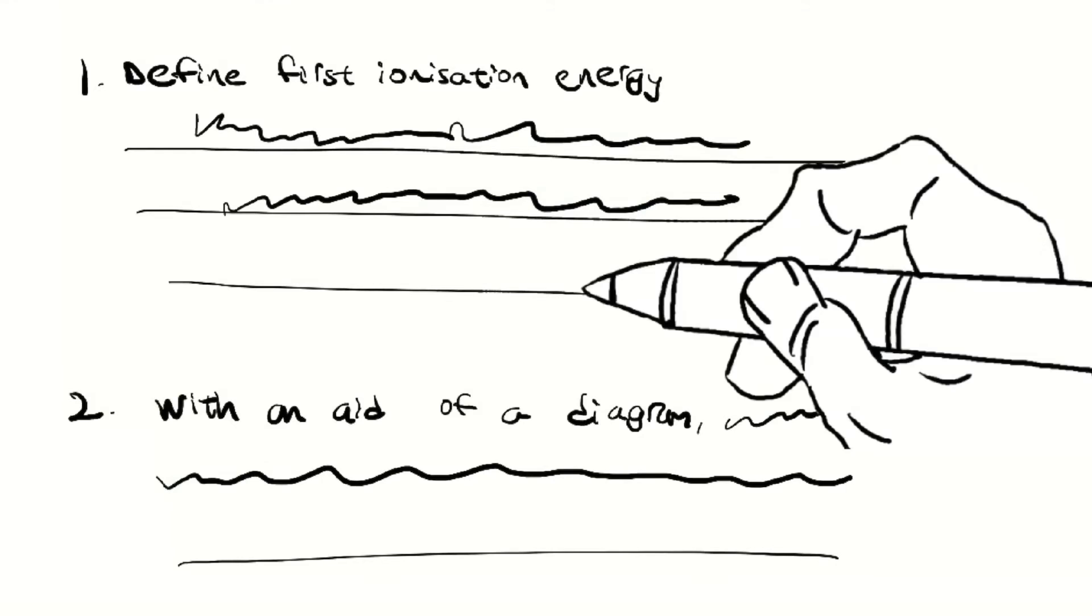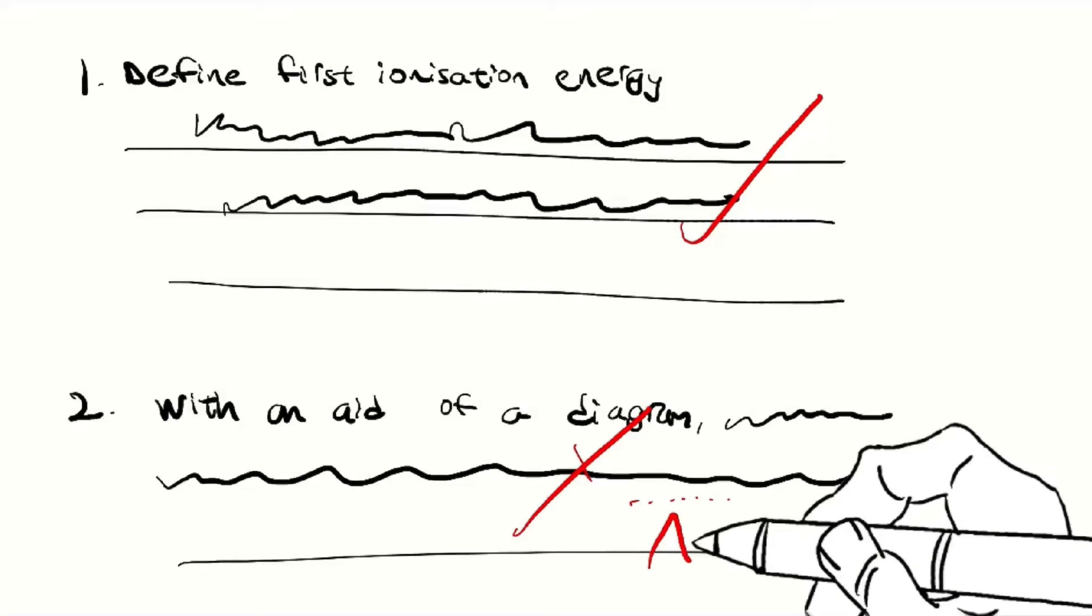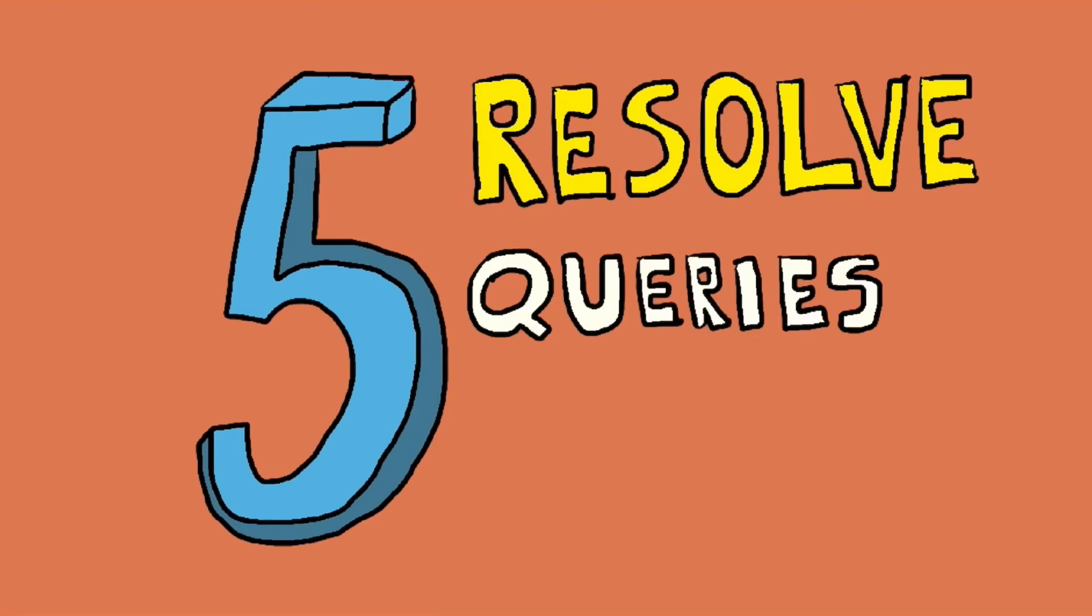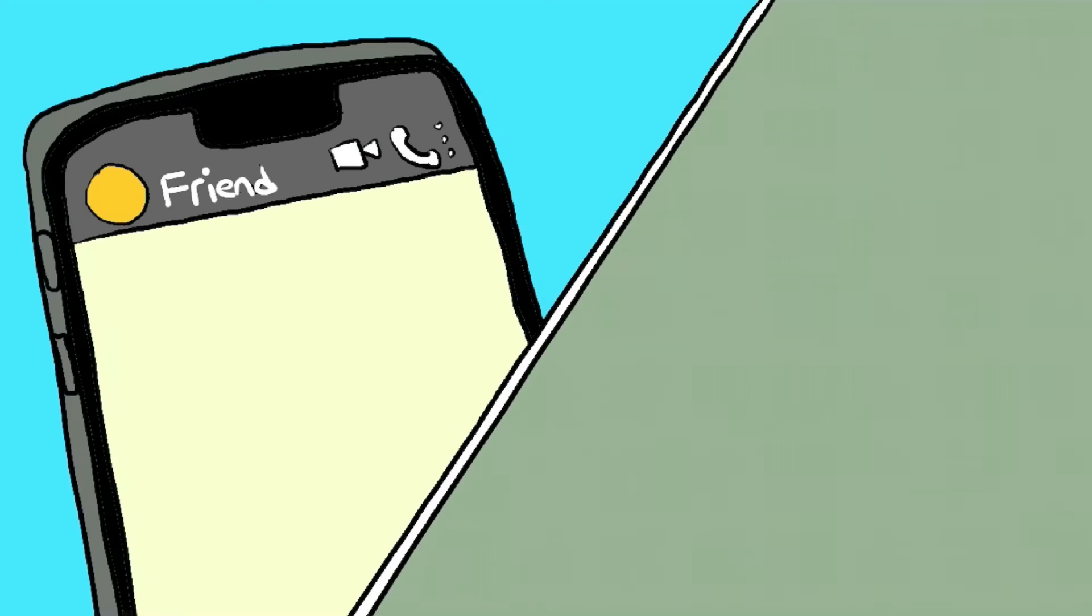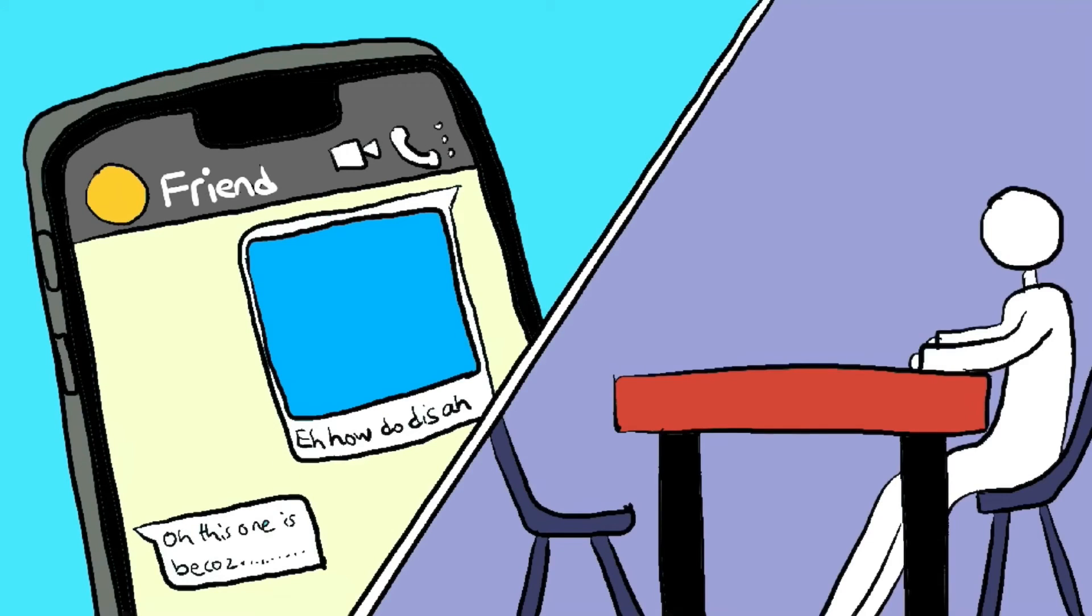After practicing the papers, it's very important that you self-mark. And if you've gotten any questions wrong or you don't know how to do certain questions, do your corrections and resolve them immediately. Do not wait. One of the ways I resolved my queries immediately was to ask my close friends and I also helped them whenever they had their own queries. So there was this really warm mutual support system. I also went for consultation sessions to see my teachers together with my friends so that we can clear all our doubts in one shot. And this is quite helpful as not only do we get to learn from each other's mistakes, it was also an opportunity to revise our content knowledge.